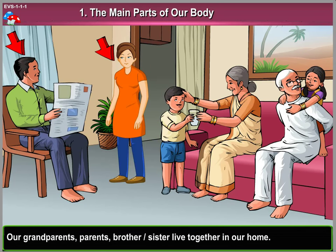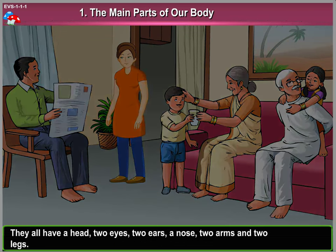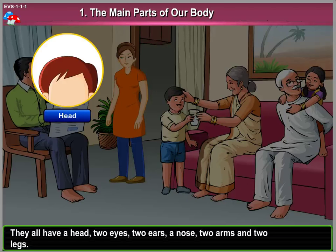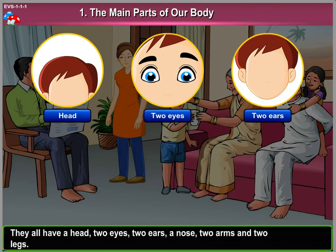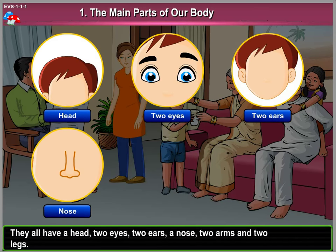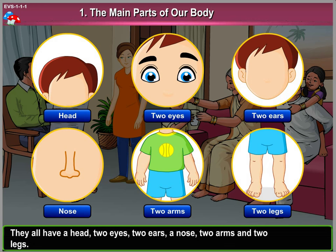Our grandparents, brother or sister live together in our home. They all have a head, two eyes, two ears, a nose, two arms, and two legs.